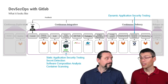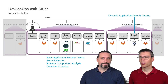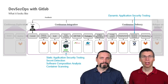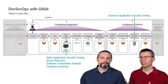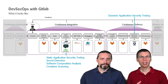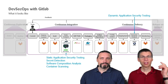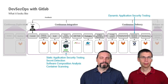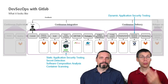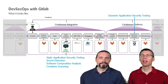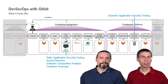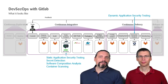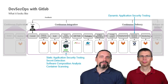Cool. Then let's build a pipeline containing in the continuous integration part security testing tools that do static application security testing, secret detection, software composition analysis, and container scanning. And let's do in the continuous delivery part dynamic application security testing. Can you help me build that? Yeah, sure. Let's have a look at how we can build such a pipeline with GitLab.